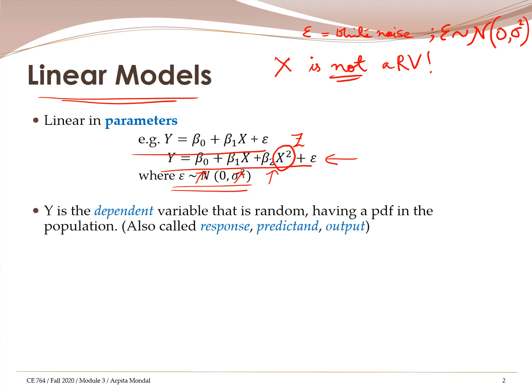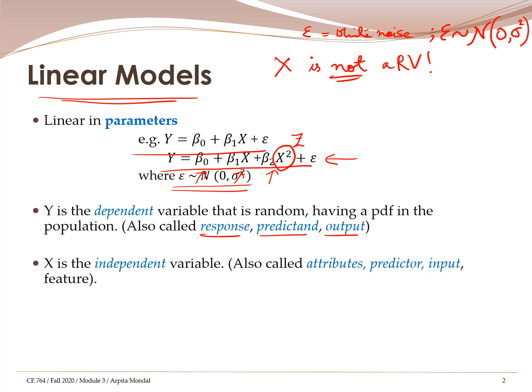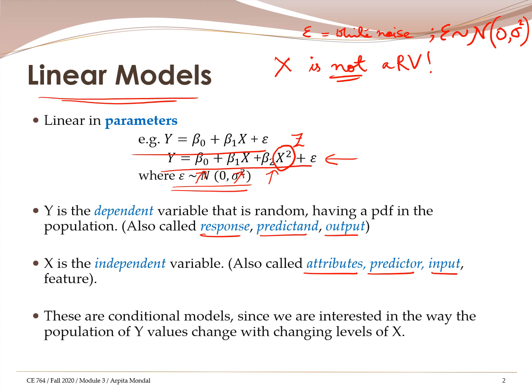To recall: y is the dependent variable, which also has different names — it's called the response, the predictand, and sometimes the output. x is the independent variable; it has other names such as attributes, predictors, inputs, or feature variable. In this type of model, all we are trying to do is understand the population distribution of y and how that changes with different levels of x.